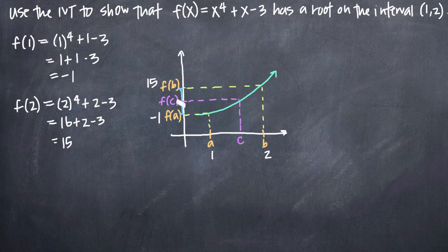So what this tells us is f(c), our point here, is 0. The root is 0. The intermediate value theorem tells us that there must be a point c here in between a and b where the function assumes the value of 0, in other words, f(c).